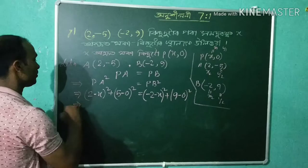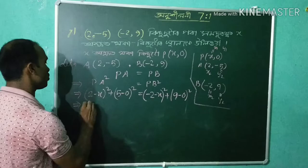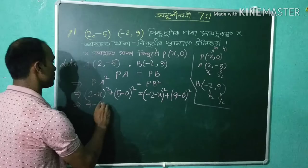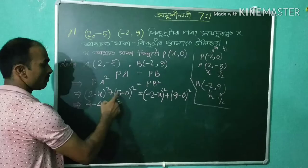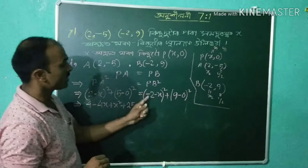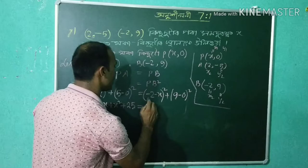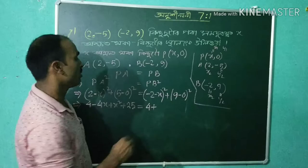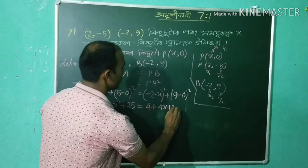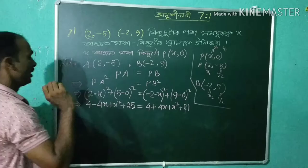Using the a minus b whole square formula: (x minus 2) whole square expands to 2 squared minus 2 times 2 times x plus x squared, that is 4 minus 4x plus x squared. And (minus 2 minus x) whole square uses a plus b formula: 4 plus 4x plus x squared. And 9 squared equals 81, while 5 squared equals 25.